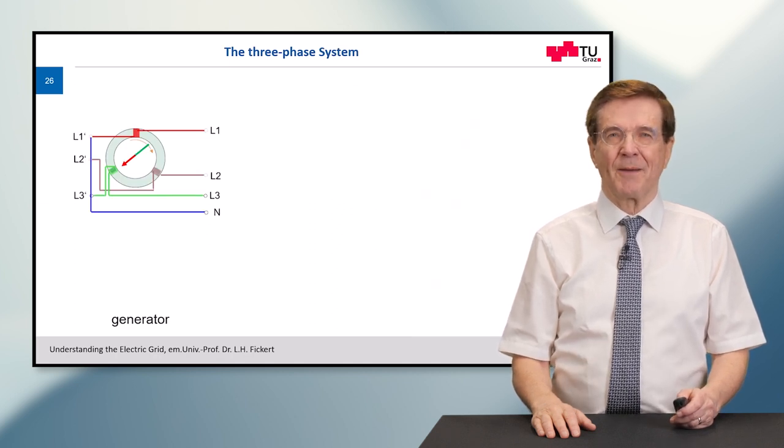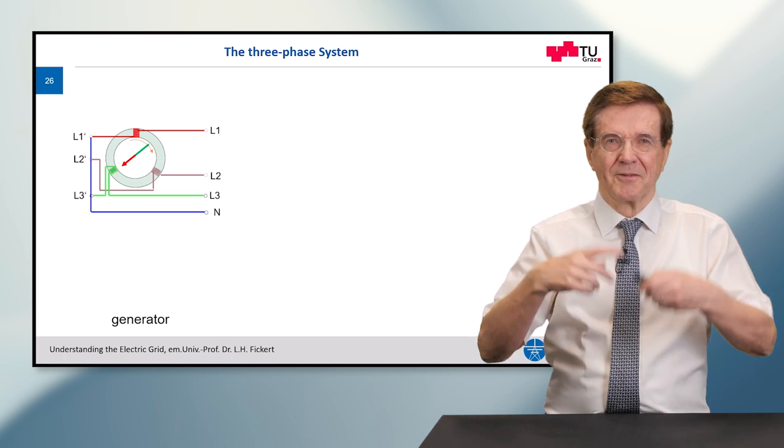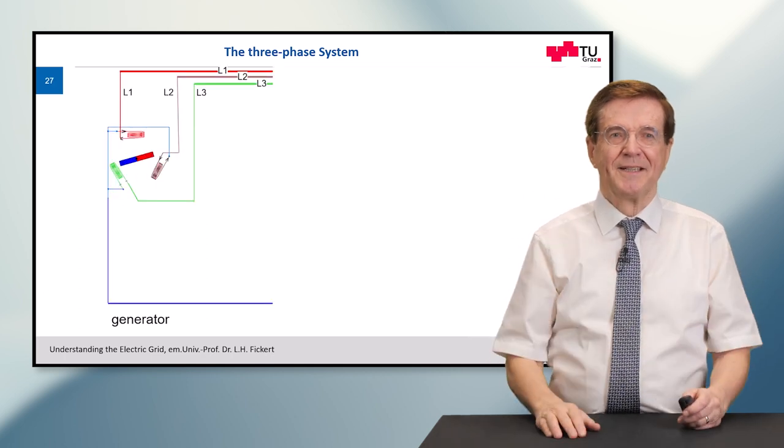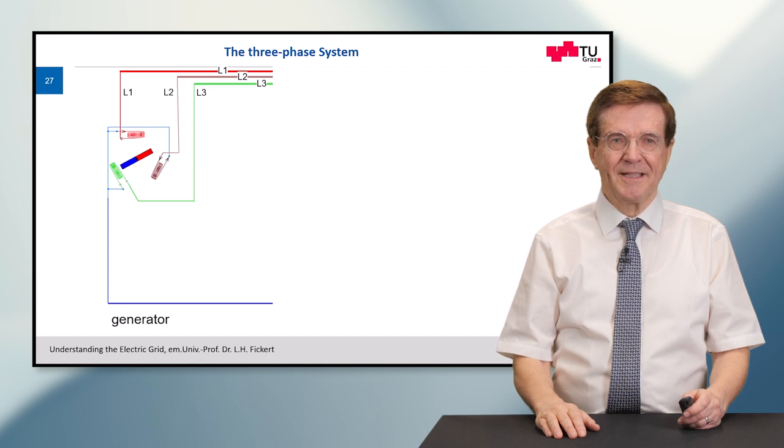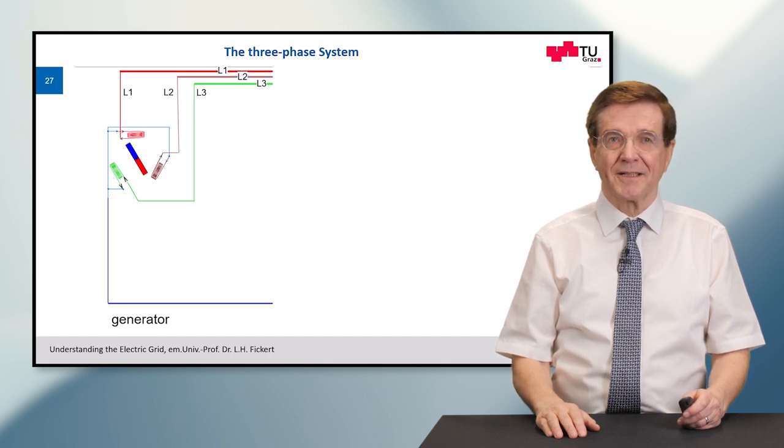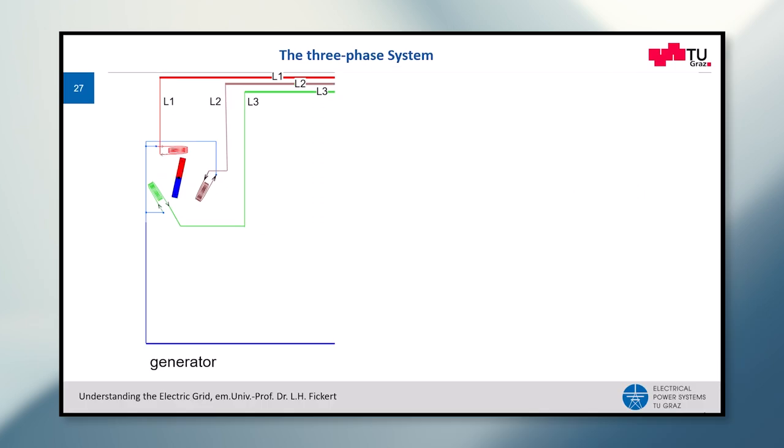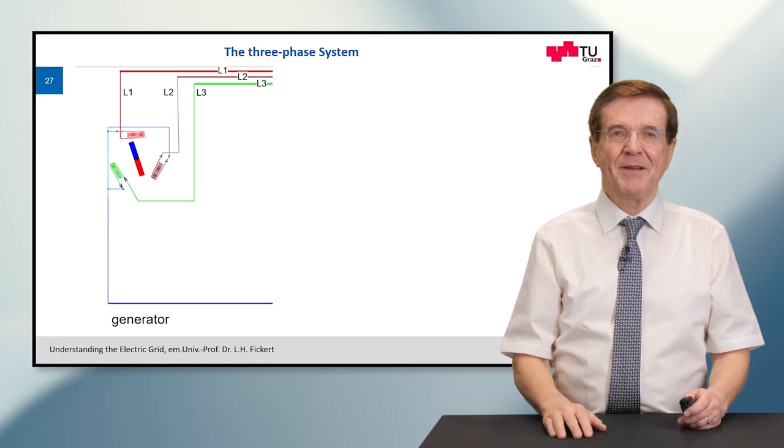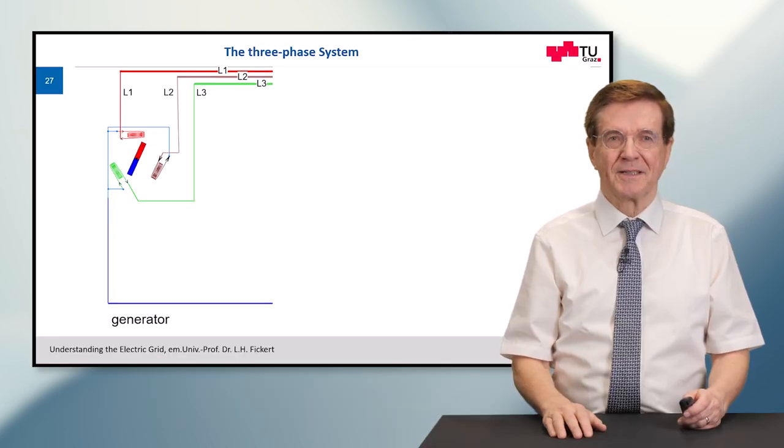Now, let's see what happens if this generator moves. One, two, three. You see, the magnet is rotating. And if you look careful at the little arrows, take the red coil number one. You will see it is activated and deactivated, activated and deactivated. And the same happens to coil number two in brown and coil number three in green.